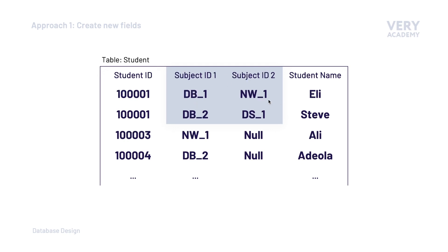So let's imagine there were 20 subjects. We would now need 20 new fields. And most of those fields for a lot of those students would be potentially null. So we're promoting null values here. So this isn't necessarily the best approach to take.